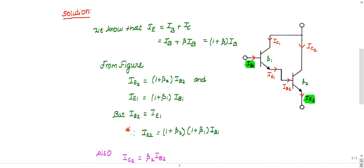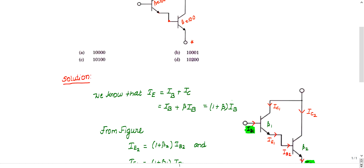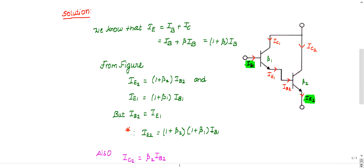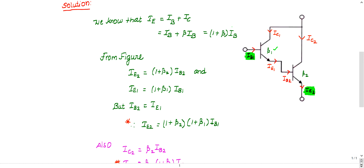I've marked all currents on the figure. I assumed beta1 for the first transistor and beta2 for the second. Let me derive the expression for general beta1 and beta2, because in an exam you may get the first transistor with beta 100 and the second with 50 or 49 — so let's derive for different beta values.